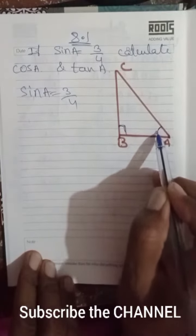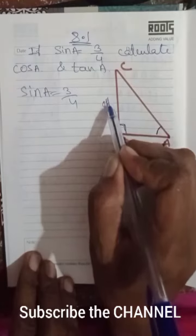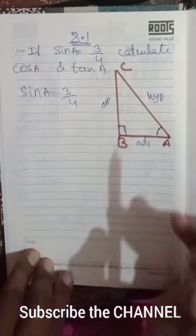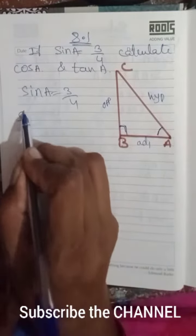...this becomes the adjacent side, so it becomes easy for you to solve. As you know, sine A equals opposite over hypotenuse, making it easy to solve the problems.